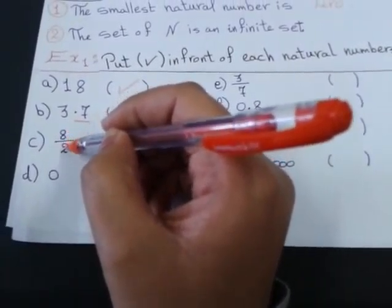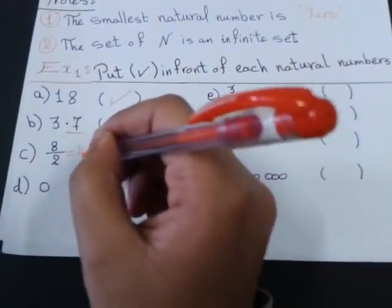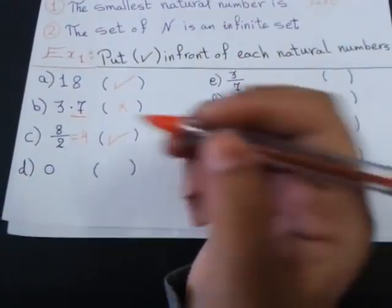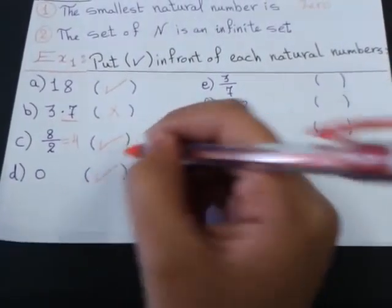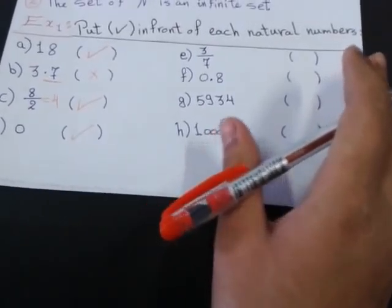So, 8 over 2 means 8 divided by 2. Equals what? Equals 4. 4 is natural number or no? Yes, it's natural. 0. It's natural. The first natural number or the smallest natural number.